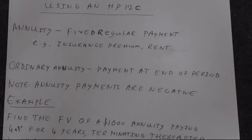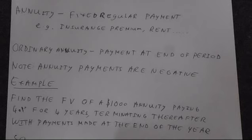We're going to find the future value of a $1,000 annuity paying 4% for 4 years, terminating thereafter, and the payments are made at the end of the year. So that's why we've got an ordinary annuity - payments are made at the end.